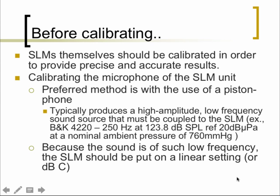Even before using your sound level meter for audiometer calibration, the sound level meter itself needs to be calibrated. An engineer would bring along a standard sound generator — often known as a piston phone or calibrator phone — which produces a very consistent output amplitude at a certain frequency. For instance, the BNK 4220 piston phone emits 123.8 dB SPL at 250 Hz under normal pressure conditions.